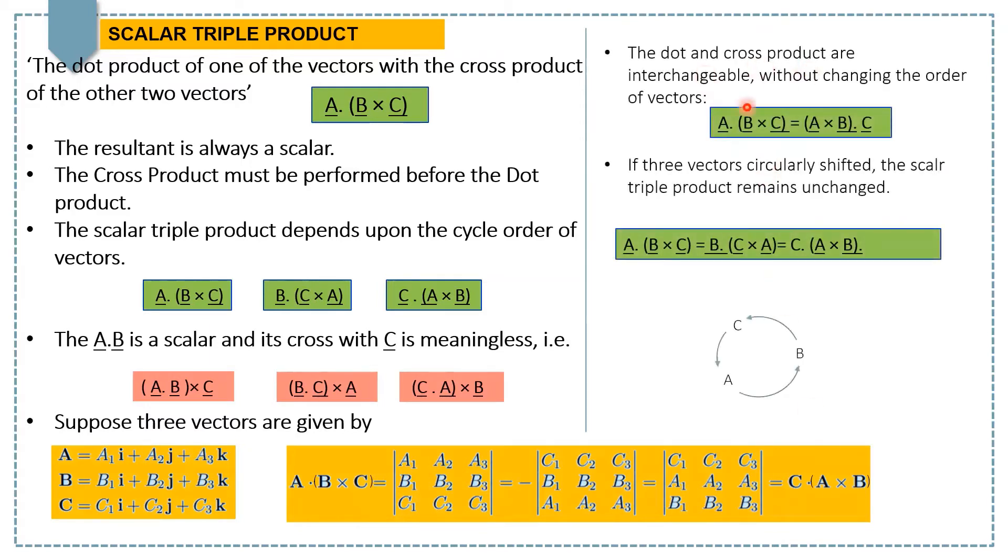The dot and cross products are interchangeable, but important is you should keep the order of the vectors. So in that case, A dot B cross C would be the same as A cross B dot C. If three vectors are circularly shifted, the scalar triple product remains unchanged. As you can see here, the result from this product will be equal to this one and similarly to this one.